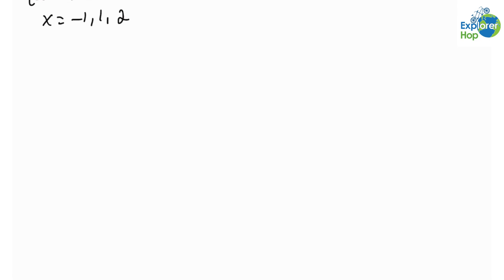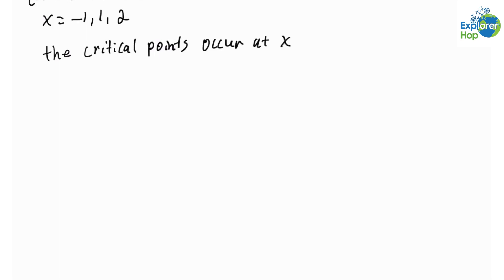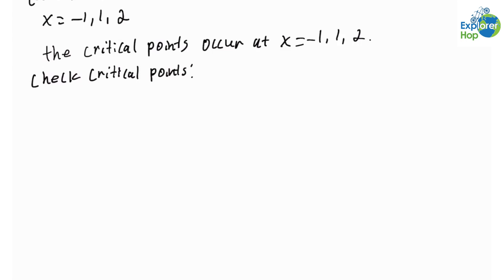In the interval from negative 1 to 2, notice that x = −1 and x = 2 are endpoints as well. So all we need to do is evaluate f(x) at x = 1. I'll reuse the already computed values at x = −1 and x = 2.